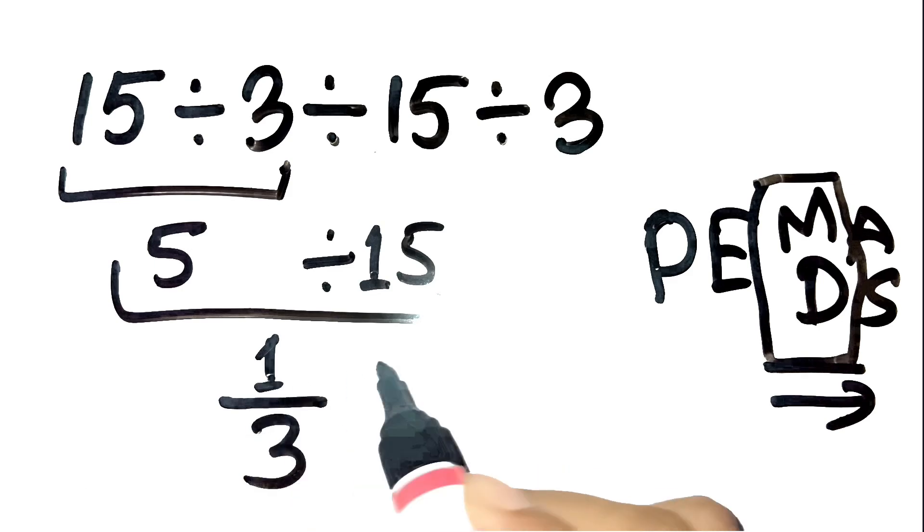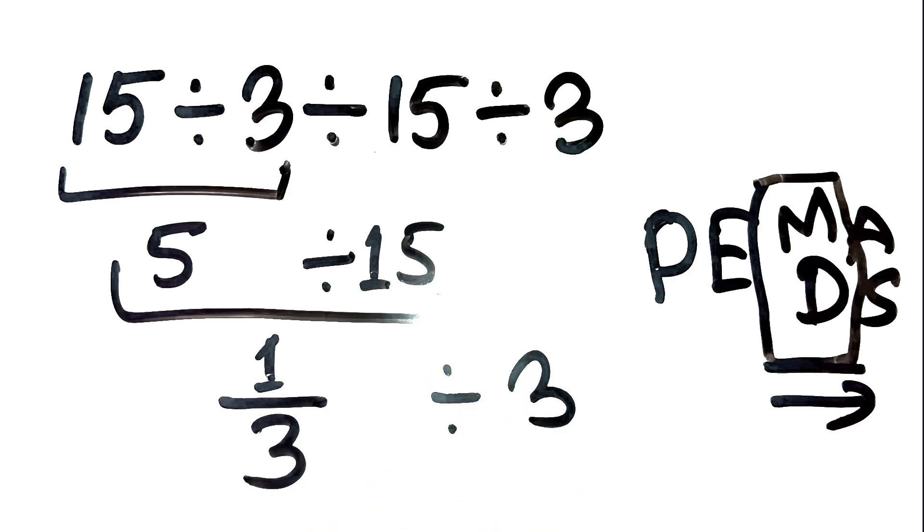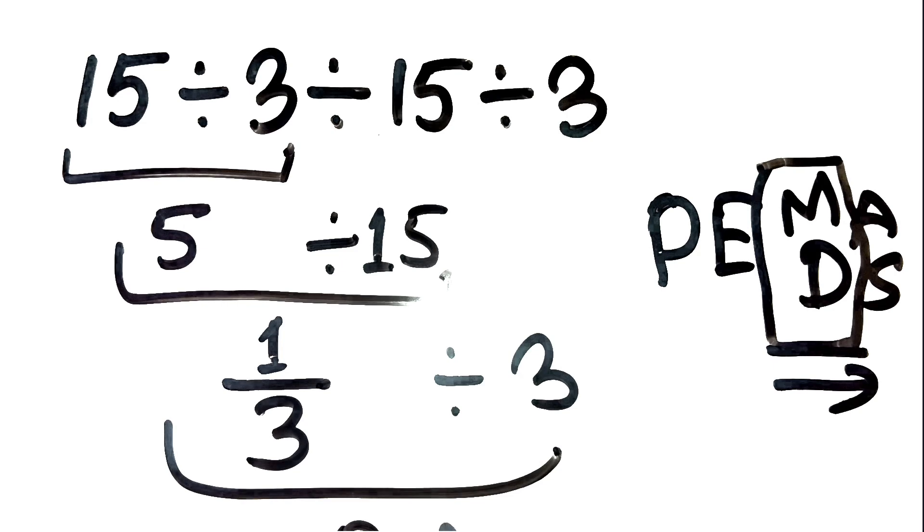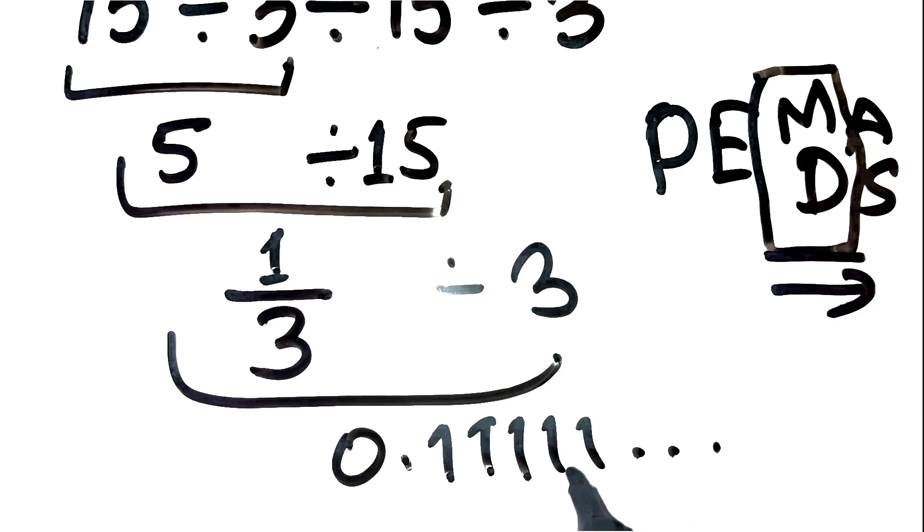Then, take that result, 0.333 and so on, and divide it by 3 again. That gives us 0.11111 and so on. So, the correct answer is 0.1111, not 1.